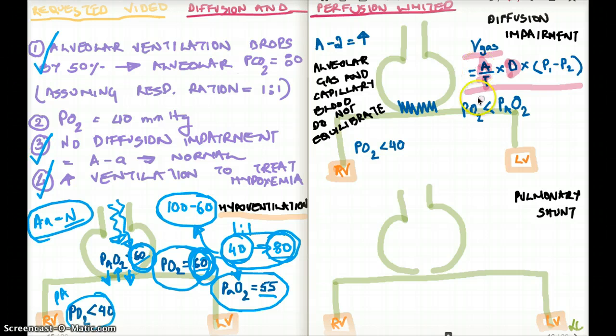So any changes in any of these variables is going to cause differences in diffusion. In this case, in diffusion impairment, what really happens is there is thickness of the alveolus. As a result, see the thickness is in the denominator. The thickness is going to be increased. So what can you say about the diffusion of the gas then?